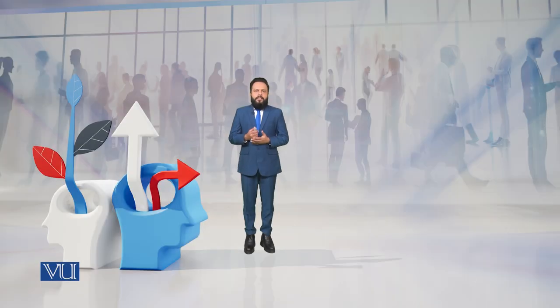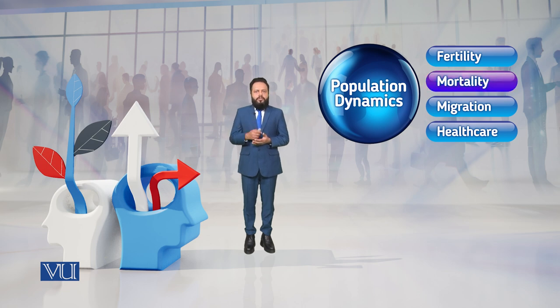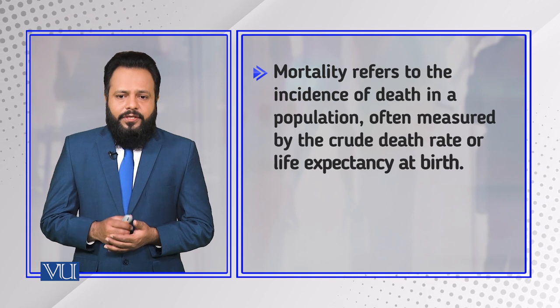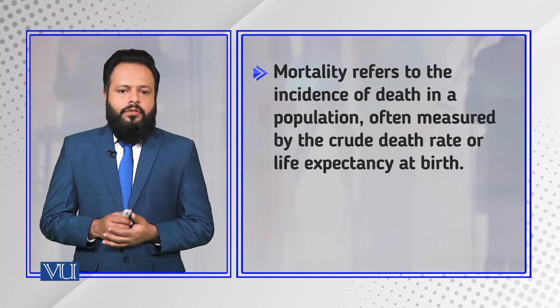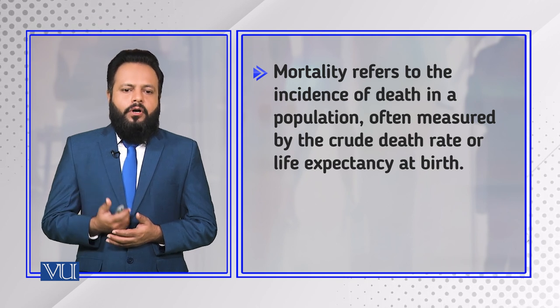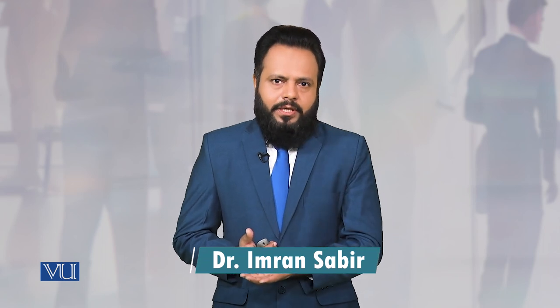Dear students, in this module we are going to understand the concept of mortality in population dynamics. Mortality refers to the incidence of death in a population, often measured by the crude death rate or life expectancy at birth. Death rate is measured by major indicators: the crude death rate and life expectancy.